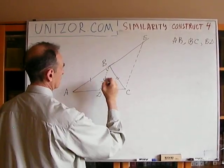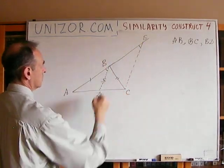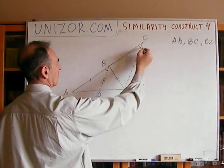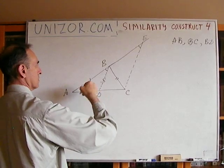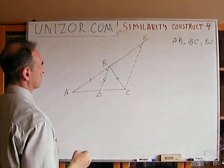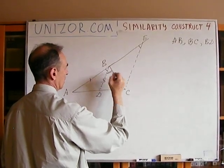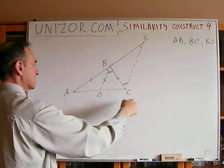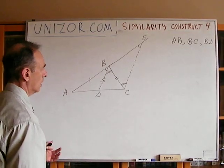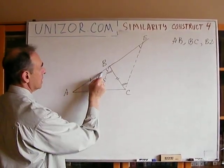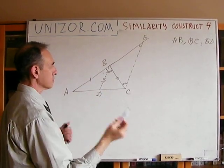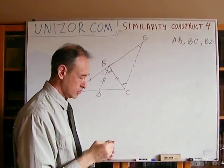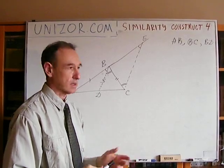This angle is equal to this one because BG and EC are parallel — those are corresponding angles with AE as a transversal. These two angles are also equal to each other because BC is a transversal and these are alternate interior angles. In between themselves they are also equal because BG, by definition of this problem, is a bisector — an angle bisector.